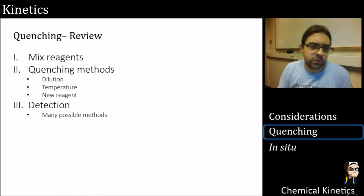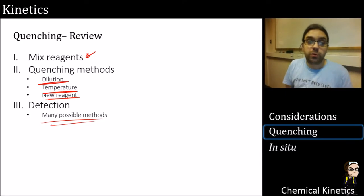How can we get over that? Well, sorry, let's just review. So what we need to do is mix the reagents. We quench by dilution, lowering the temperature, or adding something to mop it up, and detection, we can use multiple methods. That's a quick review of the quenching.